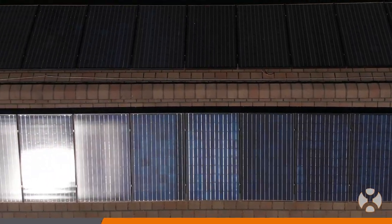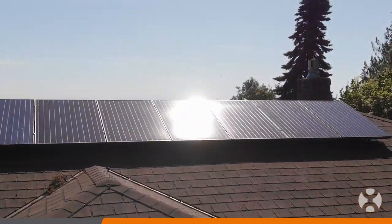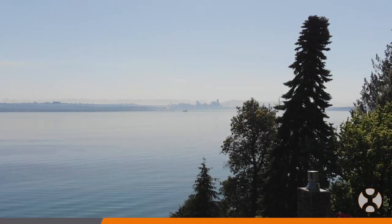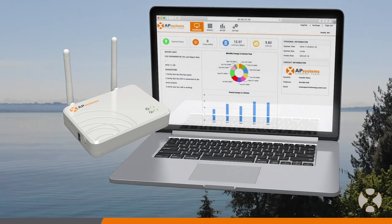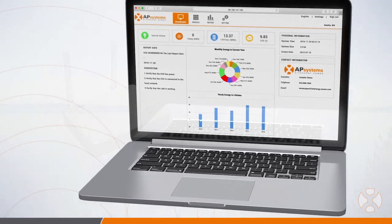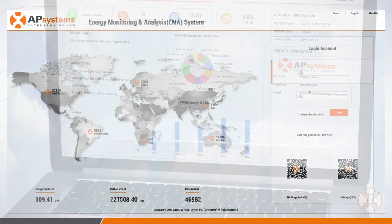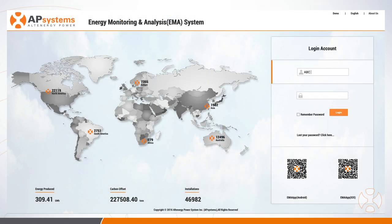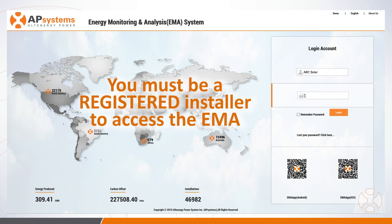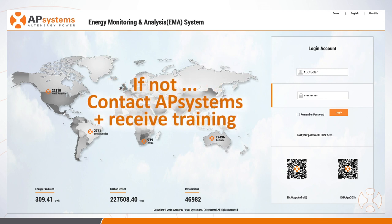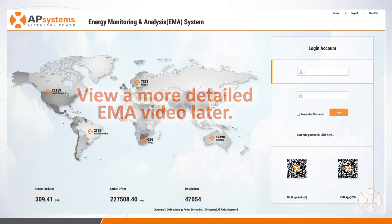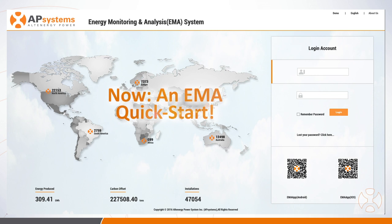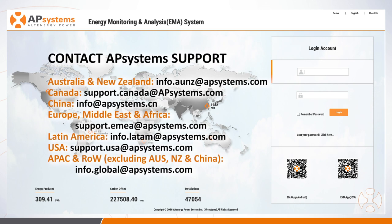With everything completed at the job site, there are a few final steps required to complete the commissioning of the system. The microinverters are producing power and communicating with the ECU. It's now time for the installer to add this ECU to their EMA account for management, which may include future monitoring, maintenance, and troubleshooting. Installers must log in to the AP Systems EMA site at APSystemsEMA.com. If you don't have an account or are unfamiliar with how to navigate the EMA site, you must contact AP Systems to request a professional installer account and receive training. More on the EMA will be covered in our detailed EMA video.